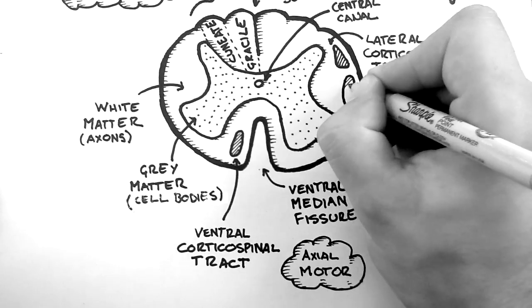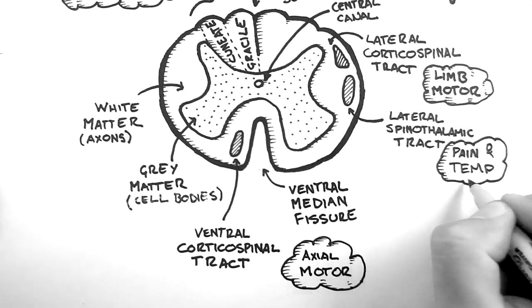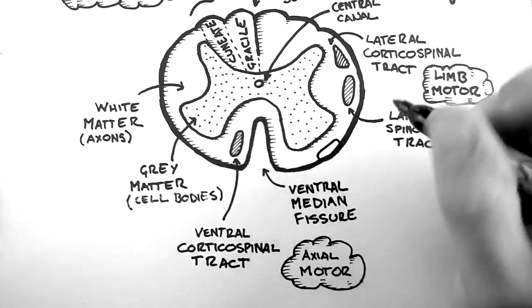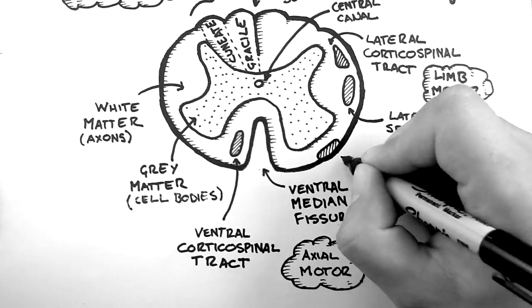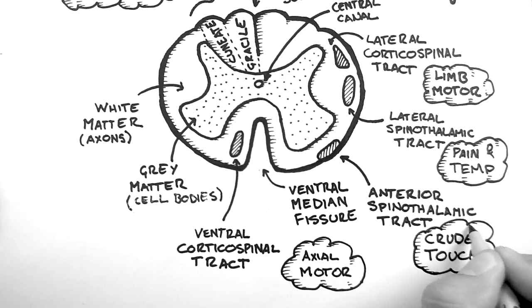Back at the side, we have the lateral spinothalamic tract, which conveys pain and temperature sensation. And at the front, we have the anterior spinothalamic tract, which carries the crude touch sense from the body to the brain.